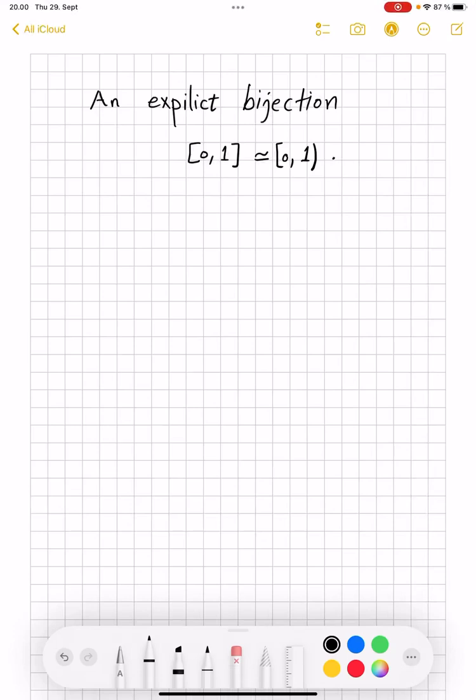Hello, today I want to talk about an explicit bijection between the sets you see here. There are many ways to see why there is some bijection between them.